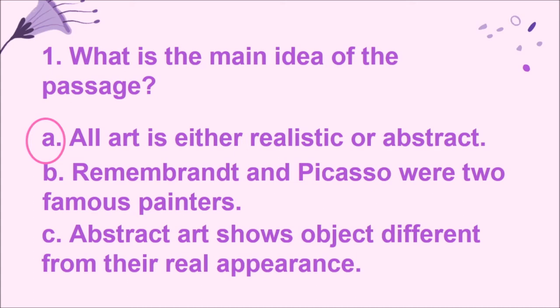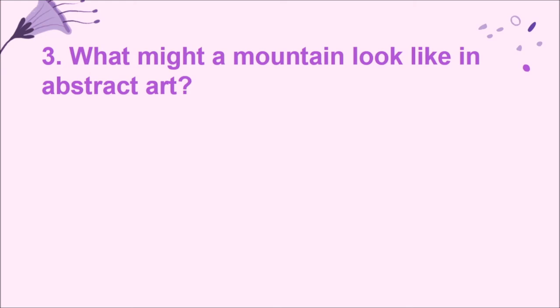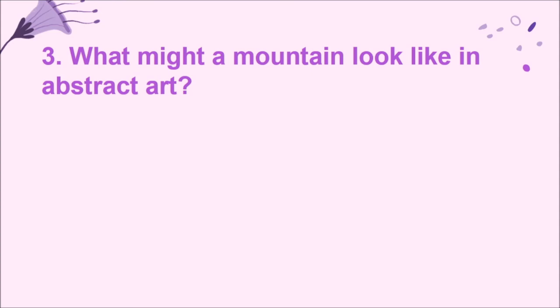Number two: art can be divided into realistic or blank art. Is it A. Abstract? B. Landscape? Or C. Triangle? If your answer is letter A, your answer is correct. Number three: what might a mountain look like in abstract art? A. A blue line? B. A green ball? Or C. A brown triangle? If your answer is letter C, brown triangle, your answer is correct.